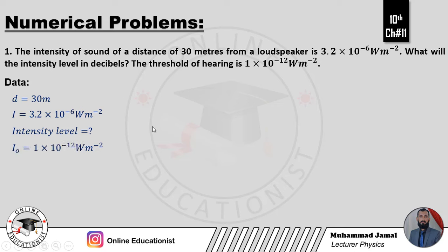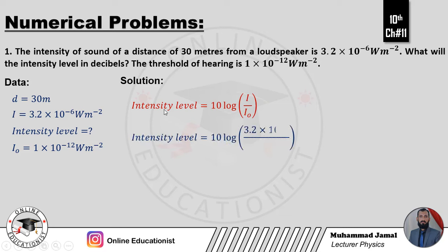Solution start karte hain. Formula use karenge: intensity level equal to 10 log (I over I naught). Yhe formula intensity level ka hai: 10 log I over I naught. Values put karna hai — intensity level equal to 10 log (3.2 into 10 power minus 6) divided by (1 into 10 power minus 12). Yhe dono values hume given thin.